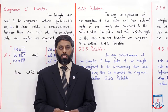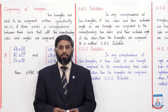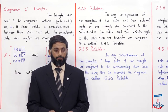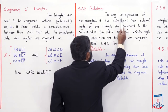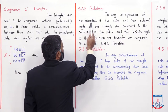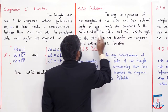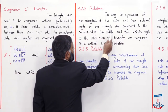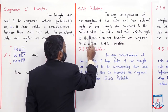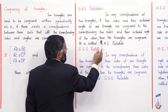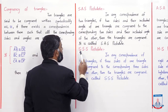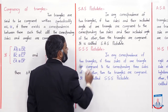Ab hum kuch postulates ki definitions samajhenge. In postulates ki definitions samajhna zaroori hai taake next chapters mein jab theorems proof karein to aasani ho. Sabse pehle SAS postulate samajhte hain: In any correspondence of two triangles, if two sides and their included angle of one triangle are congruent to the corresponding two sides and their included angle of the other, then the triangles are congruent. It is called SAS postulate.